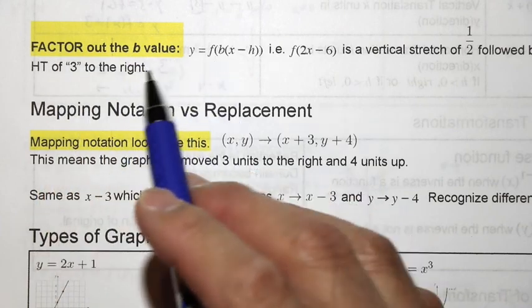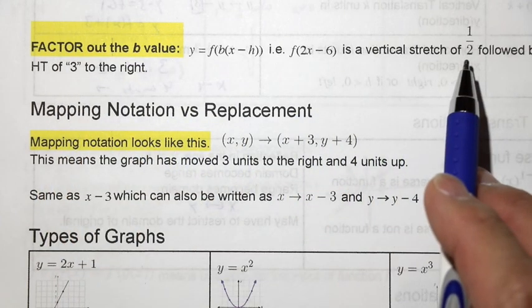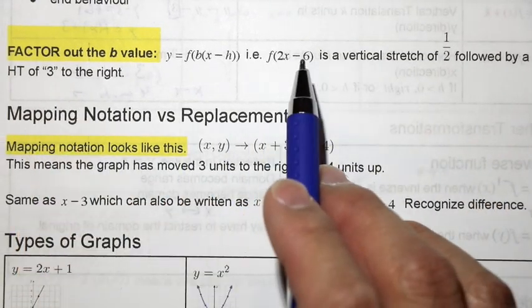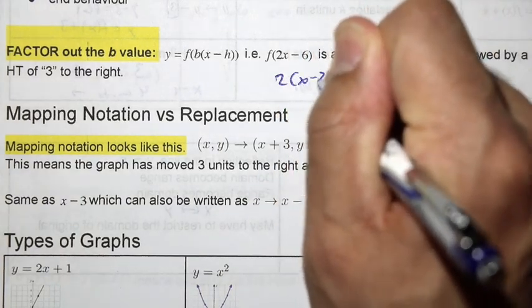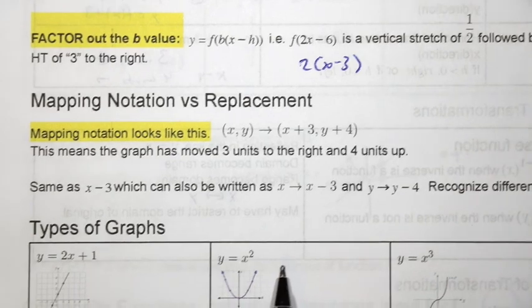Remember to factor out the b-value before you determine the horizontal translation. For example, f of 2x minus 6 is a vertical stretch of a half. Remember that the b-value is the reciprocal of the stretch factor. Followed by a horizontal translation of 3 to the right. Once you've factored out this b-value, then you can see that it's a horizontal translation of 3 to the right.